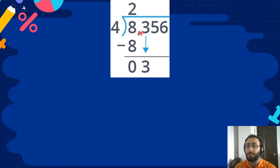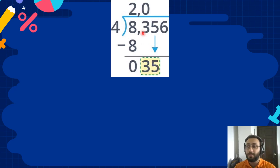How many 4's fit into 3? We cannot fit any 4 into 3, so we write 0. Next, we bring the next digit down. Now it's 35.